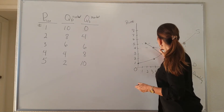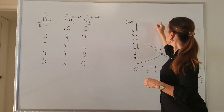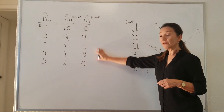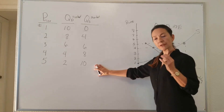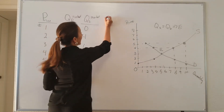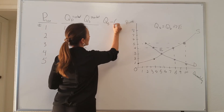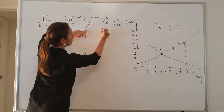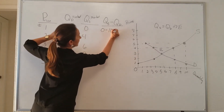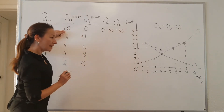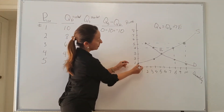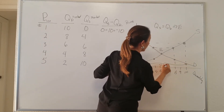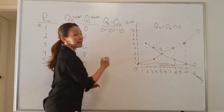Equilibrium occurs where quantity supplied equals quantity demanded. If you have demand and supply schedules and need to figure out shortages or surpluses, here's how: take quantity supplied minus quantity demanded. At a price of $1, quantity supplied is zero minus quantity demanded of 10, giving us negative 10. That tells us we have a shortage of 10 units — 10 ice cream cones. A negative result means a shortage.